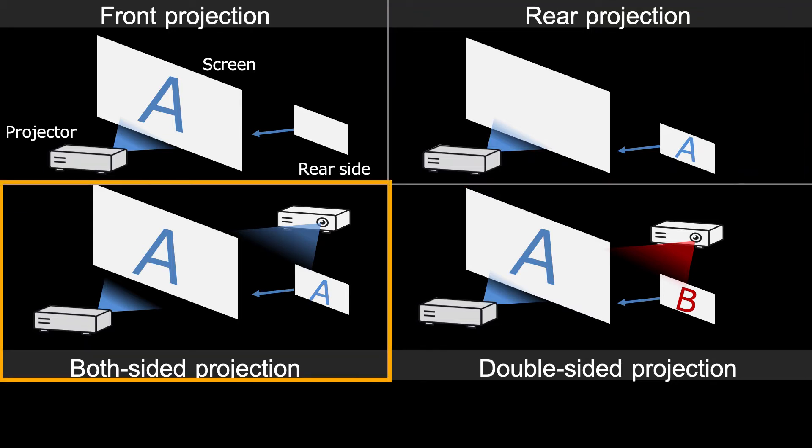The third is both-sided projection. It is the method to project the same images on both sides of the screen using one or two projectors.